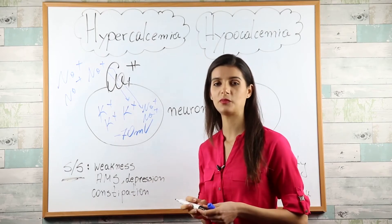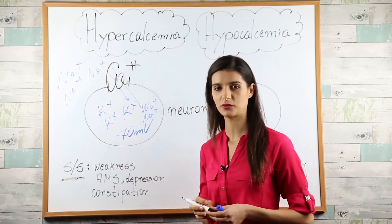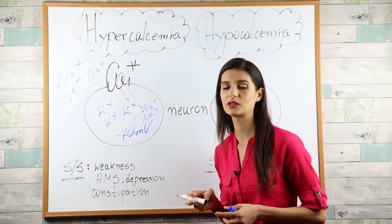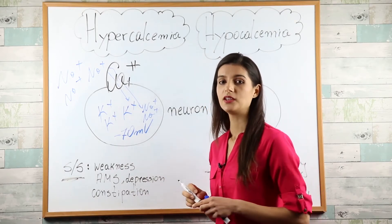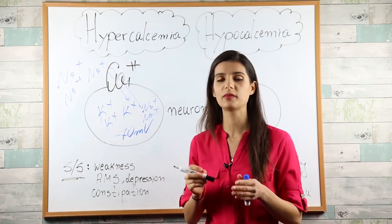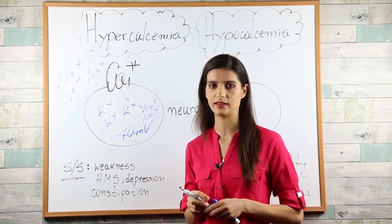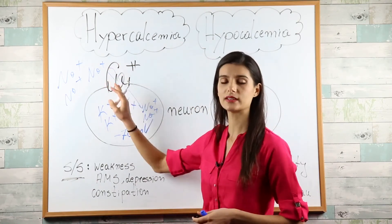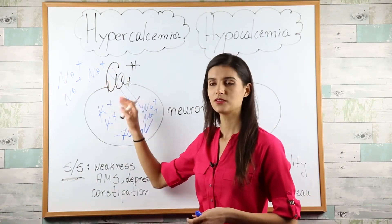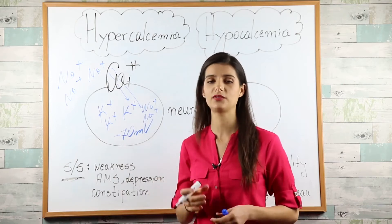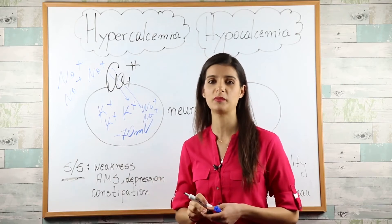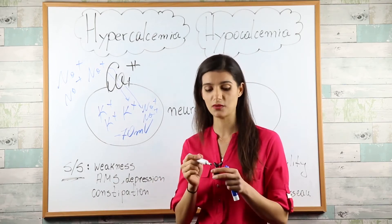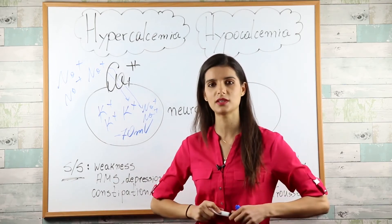So it stops the depolarization of the neuron. Now in hypercalcemia, you just have too many calcium ions, so this channel will be constantly blocked, making it very difficult for the neuron to depolarize. And this is how we explain the physical symptoms.